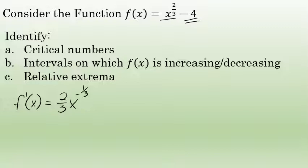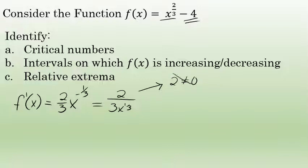I will rewrite f'(x) as 2 over 3x^(1/3). Critical numbers occur at x-values where the derivative is equal to zero. When the derivative is a rational function like this, you find where it equals zero by setting the numerator equal to zero — but in this case the numerator is just 2, it doesn't include a variable, so there are no values where this derivative equals zero.